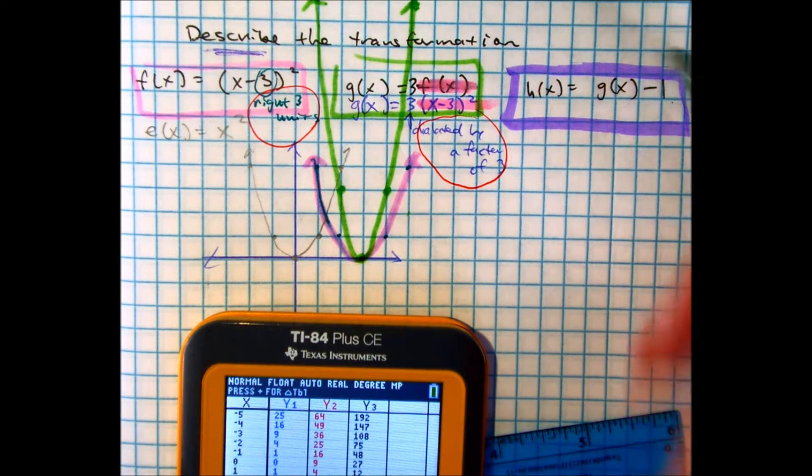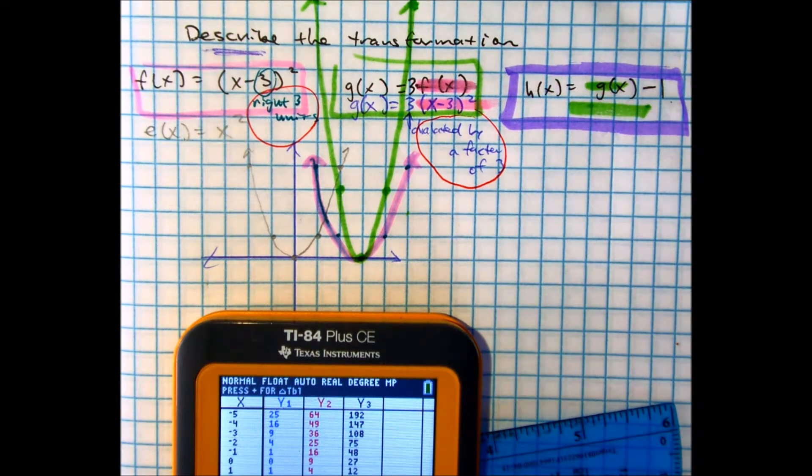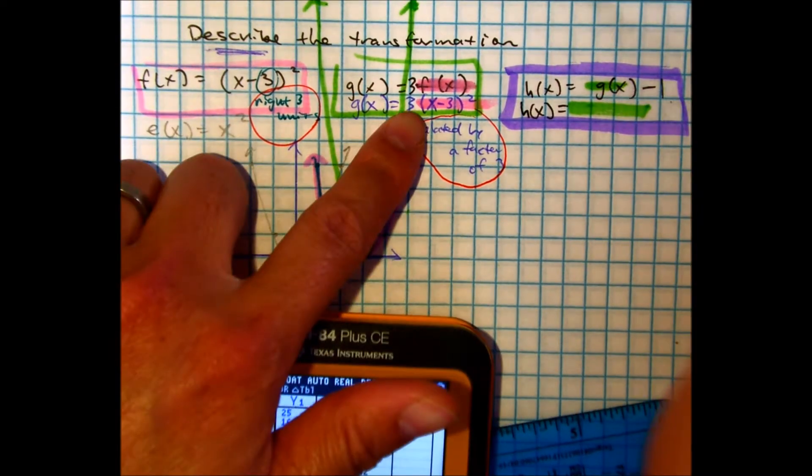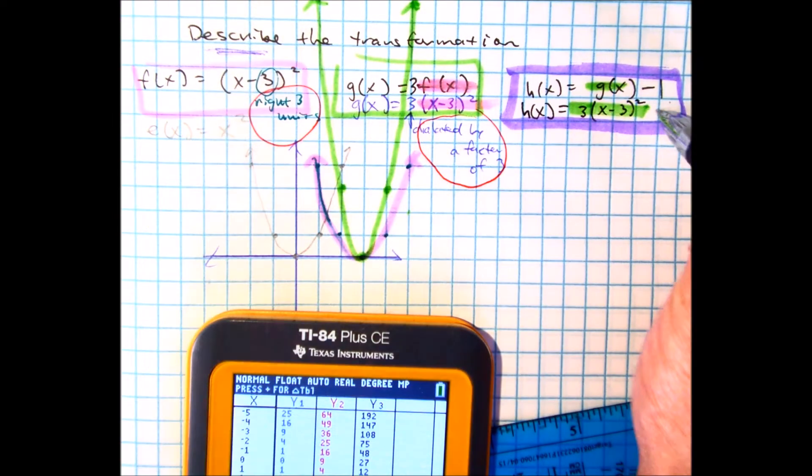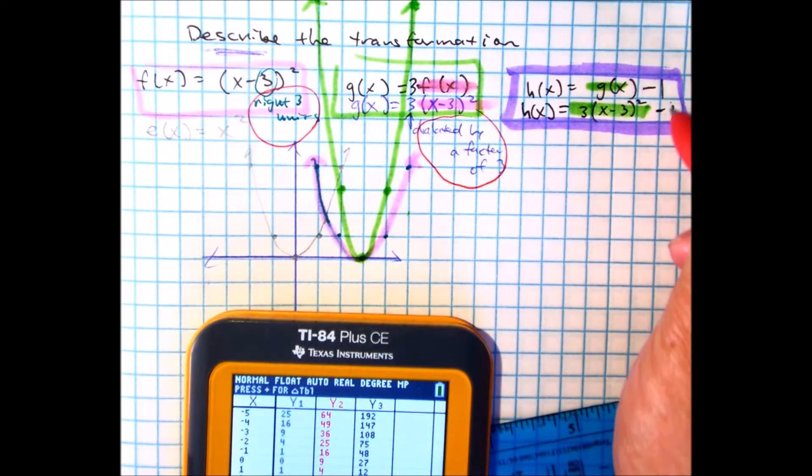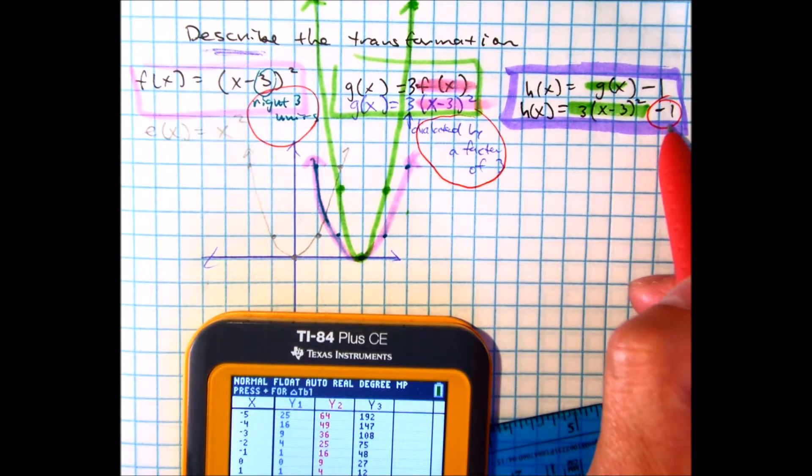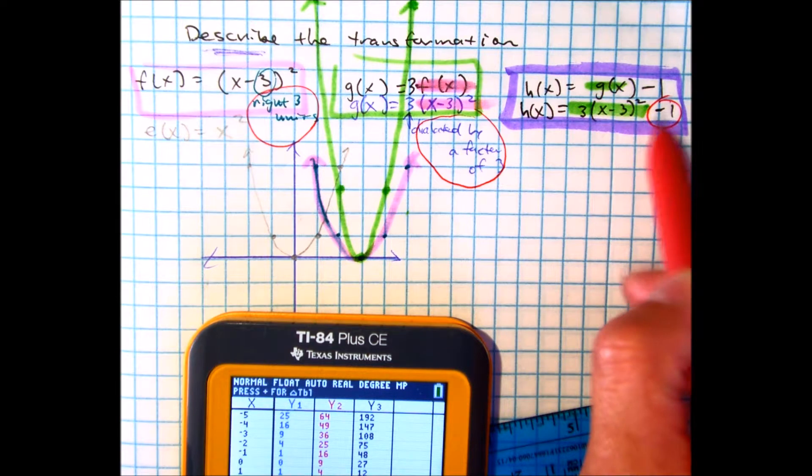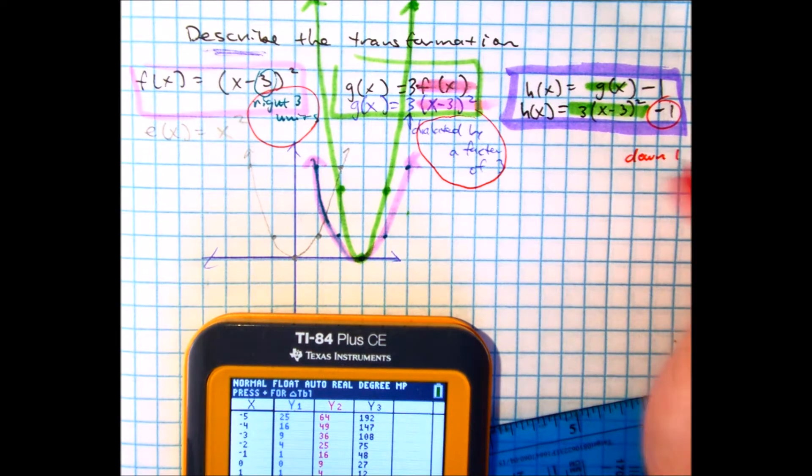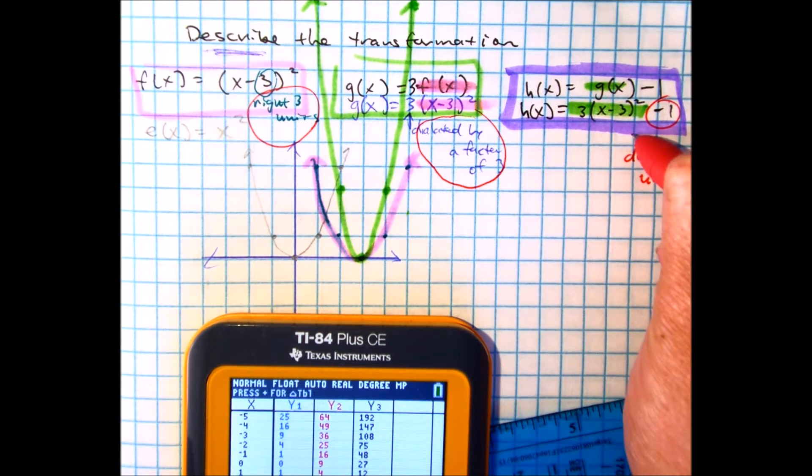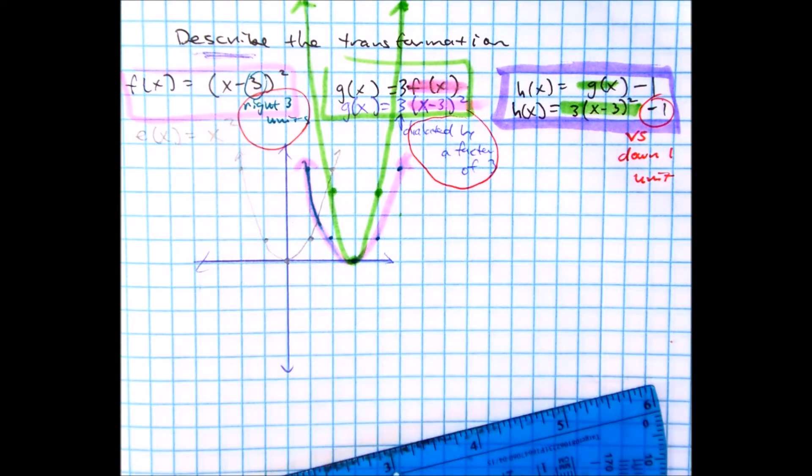And in this last part, it just tells us a minus one. So another way of writing this problem is H of X equals three times X minus three squared, and don't forget the minus one. Class, what does this minus one tell us? Remember, it's on the outside. Vertical translation. So vertical translation just means down one unit. Fancy word is they call this a vertical shift, a vertical shift of down one unit.